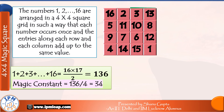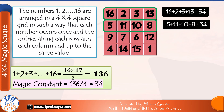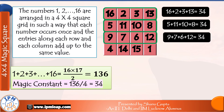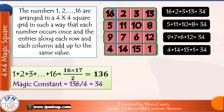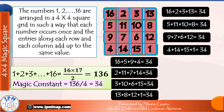Let's verify. Row 1: 16 plus 2 plus 3 plus 13 is equal to 34. Row 2: 5 plus 11 plus 10 plus 8 is equal to 34. Row 3: 9 plus 7 plus 6 plus 12 is equal to 34. Row 4: 4 plus 14 plus 15 plus 1 is equal to 34. Column 1: 16 plus 5 plus 9 plus 4 is equal to 34. Column 2: 2 plus 11 plus 7 plus 14 is equal to 34. Column 3: 3 plus 10 plus 6 plus 15 is equal to 34. Column 4: 13 plus 8 plus 12 plus 1 is also equal to 34.